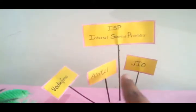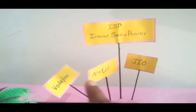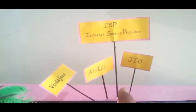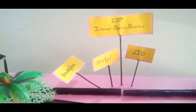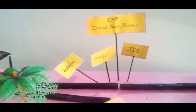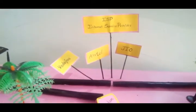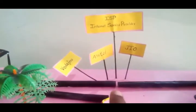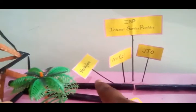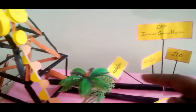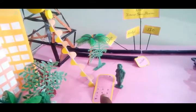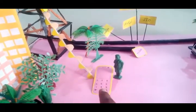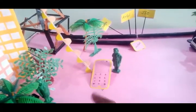For example, Vodafone and Jio are internet service providers. From the ISP, the information will reach through the optical fiber cable to the corresponding cell tower. So if you are using Jio, you can get the information from the Jio cell tower through electromagnetic waves. This is how information is transferring to your mobile.